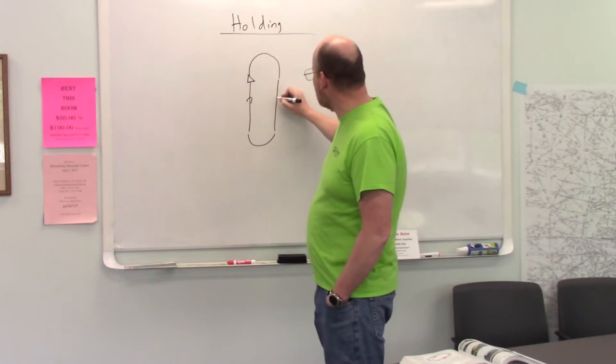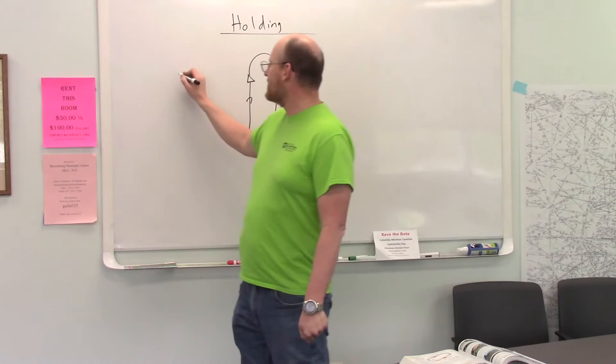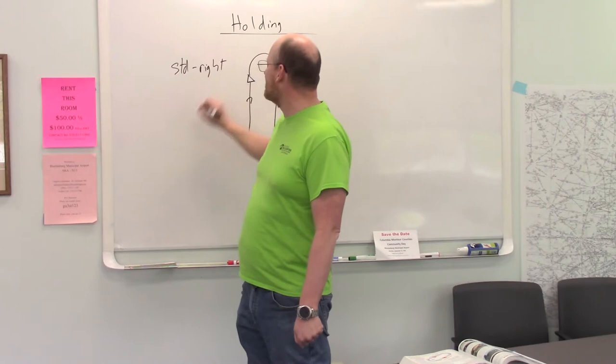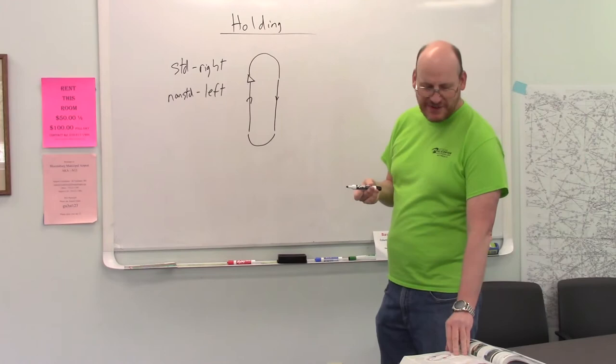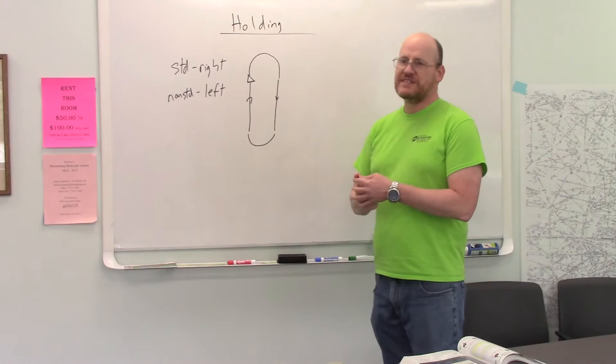Now, I have drawn my hold where all these turns are made to the right. So standard turns are to the right, and non-standard is to the left. You might say, well, why is that? Because traffic patterns are typically to the left, and not to the right.